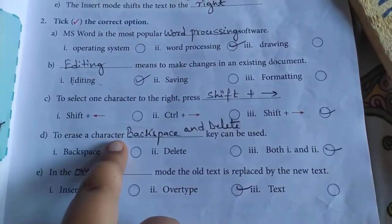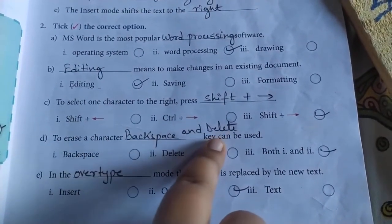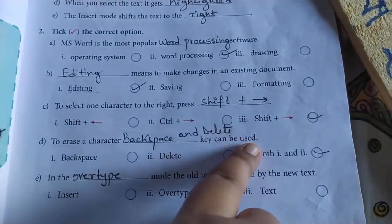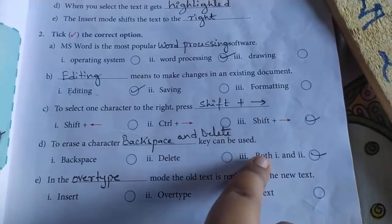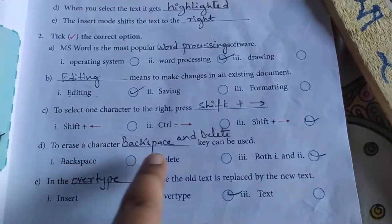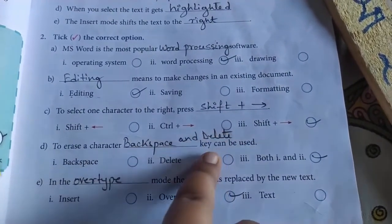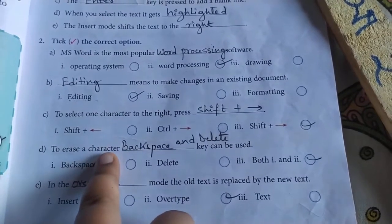To erase a character, blank key can be used. Options: backspace, delete, both one and two. Both one and two is correct. That means backspace and delete. Both keys are used to delete or erase a character.